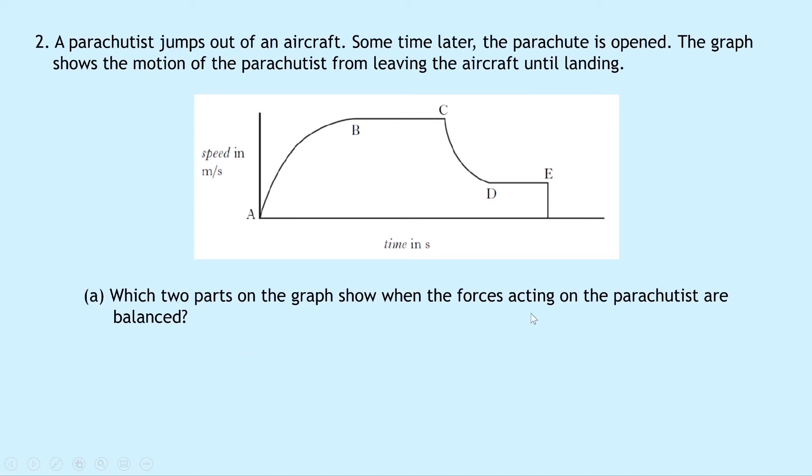You should know that the two instances of balanced forces are going to occur when the parachutist has reached terminal velocity. So between B and C is our first terminal velocity, and between D and E is our second terminal velocity. We've got constant speed and constant speed. So our two parts are from B to C and from D to E.